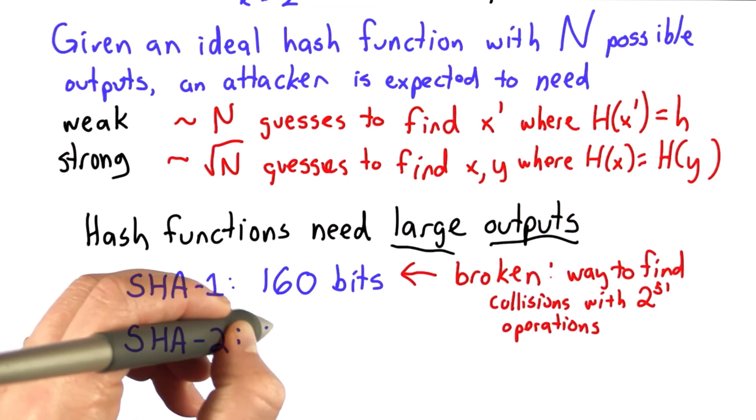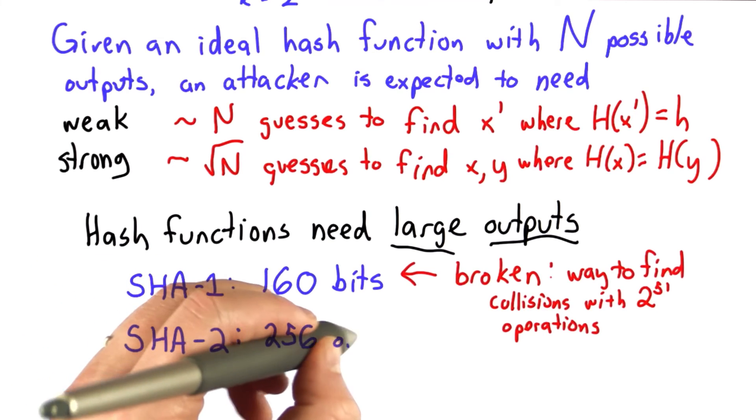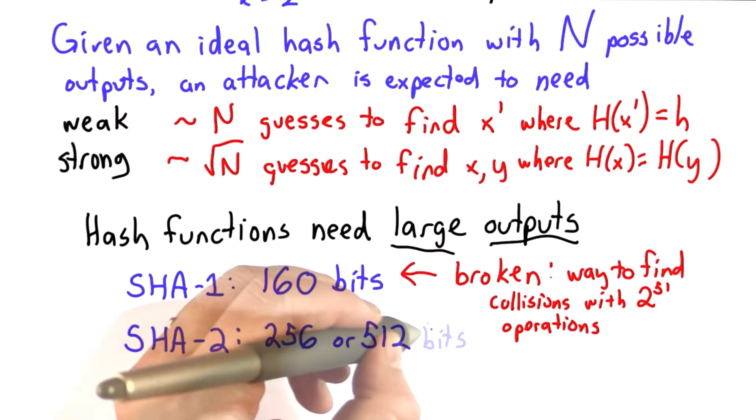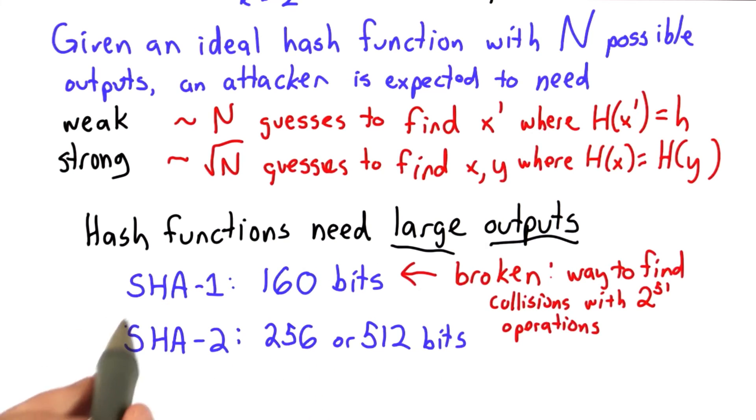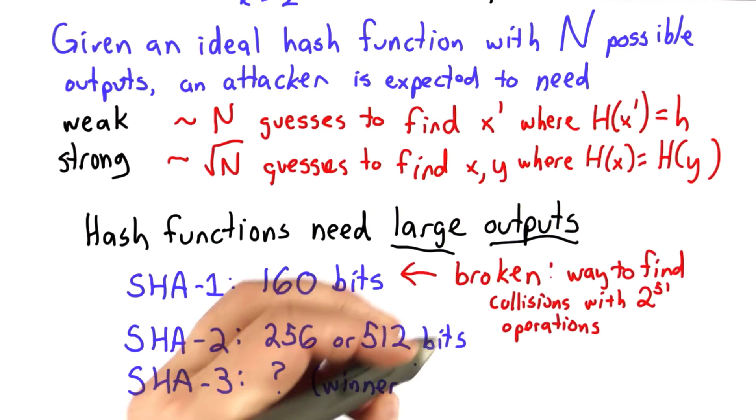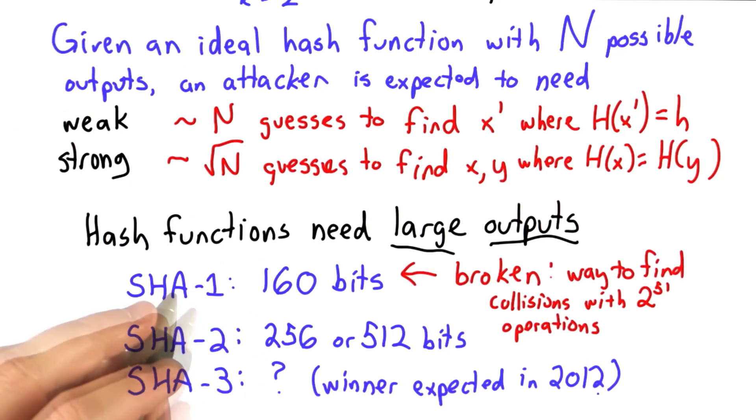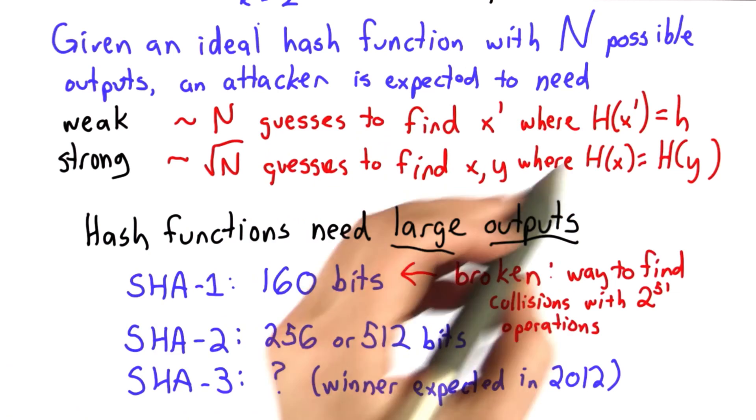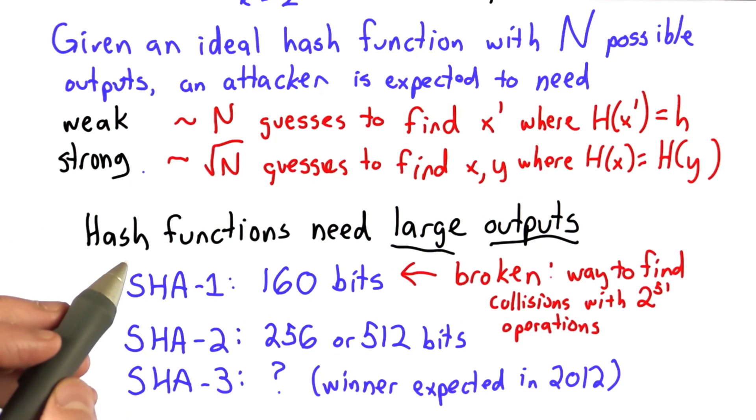SHA-2, the output can be either 256 or 512 bits. As long as there aren't mathematical weaknesses in the cipher, if it was really ideal hash function, this would be big enough to defeat any realistic attacker. But they're beginning to be suggesting that there may be ways to break this. No practical breaks have been found yet. In SHA-3, the winner is expected to be announced later this year. So for the rest of this class, we're going to assume that we do have an ideal hash function, and that it has enough outputs to provide strong collision resistance against a motivated attacker.